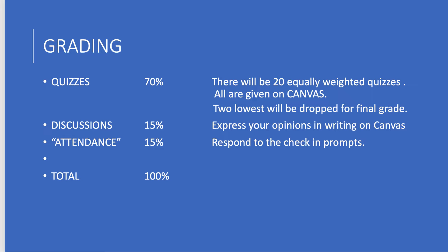Here's the grading scheme. There are 20 equally weighted quizzes on Canvas, and they count for 70% — the bulk of your grade. The two lowest quiz grades will be dropped, so you have two opportunities where a forgotten quiz won't destroy your grade, but only two. Also, most students who fail do so because they forget to take quizzes — they let deadlines slip. I'm not going to send you reminders; you need to know there are 20 quizzes.